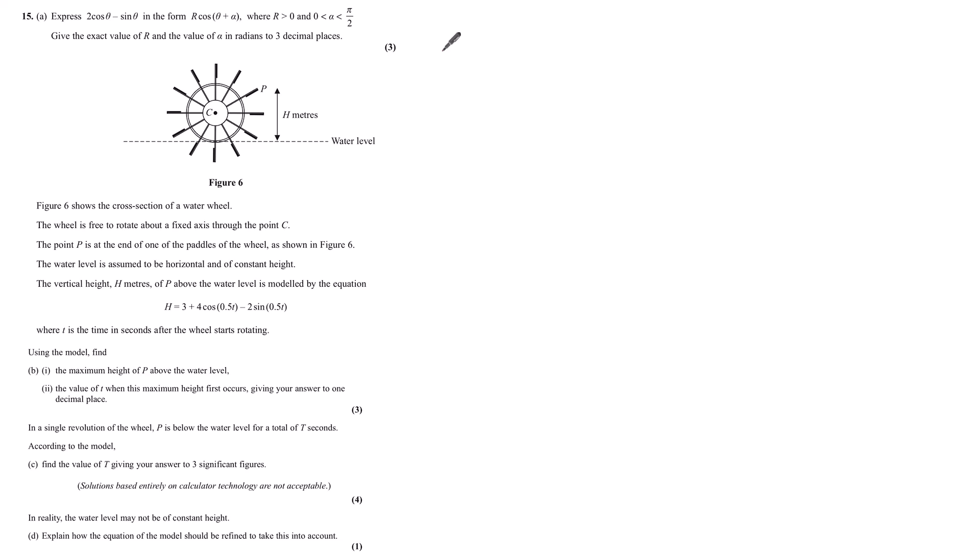We can start this question looking at r cos(θ + α). In your formula booklet you'll find the compound angle formula, and being careful to take the one with the correct sign. Taking the plus, I have r cos(θ + α) equals r cos θ cos α minus r sine θ sine α.